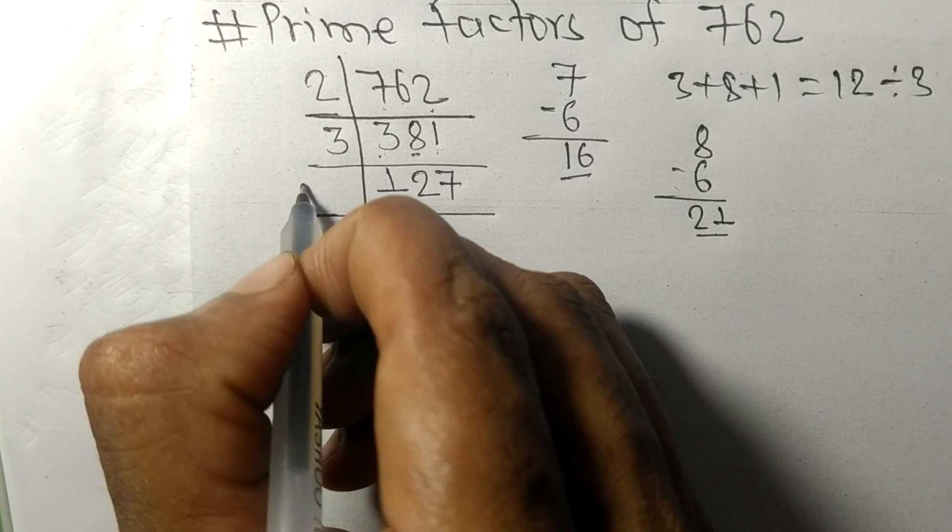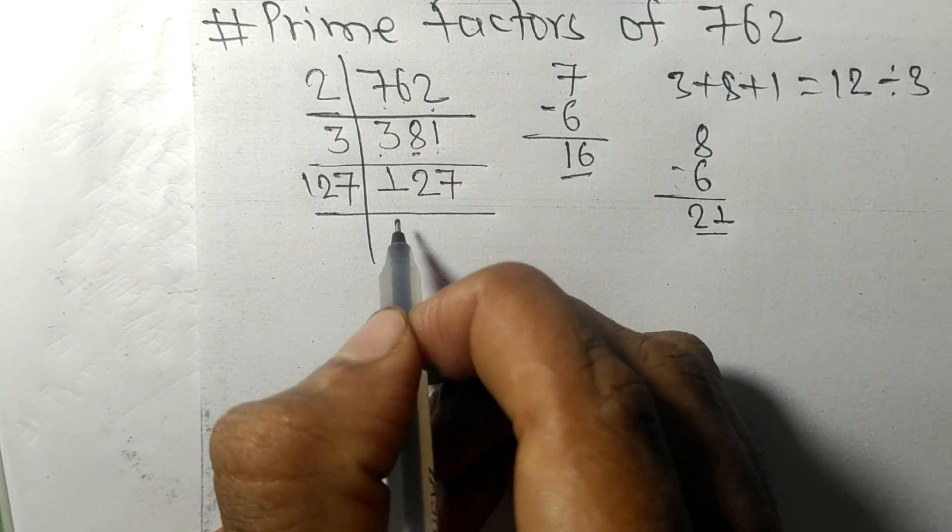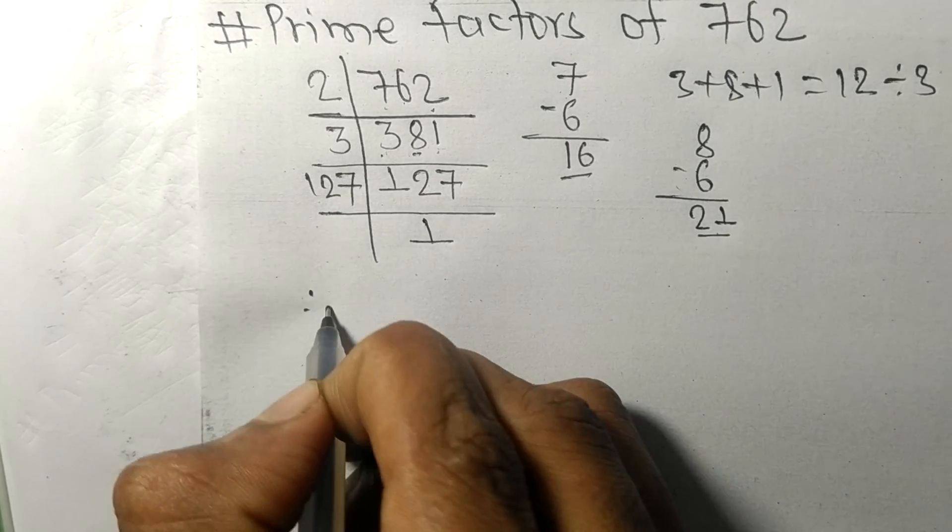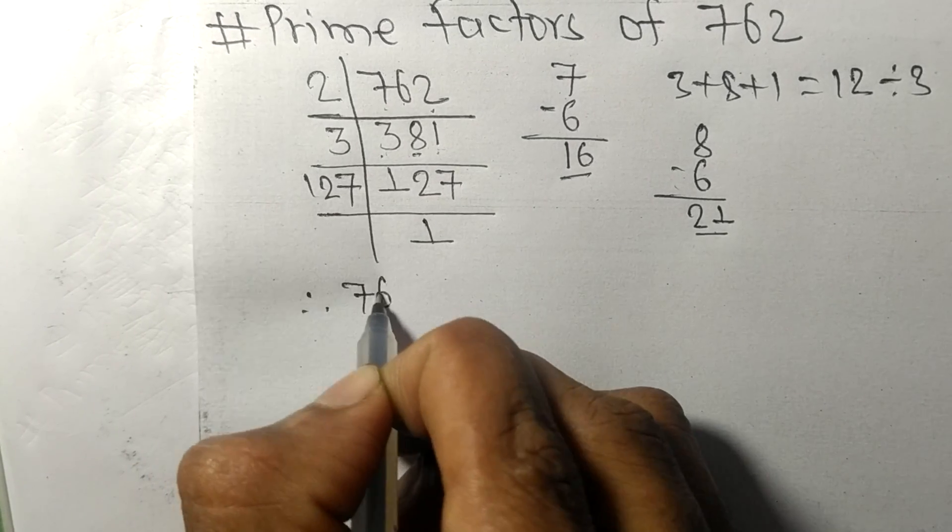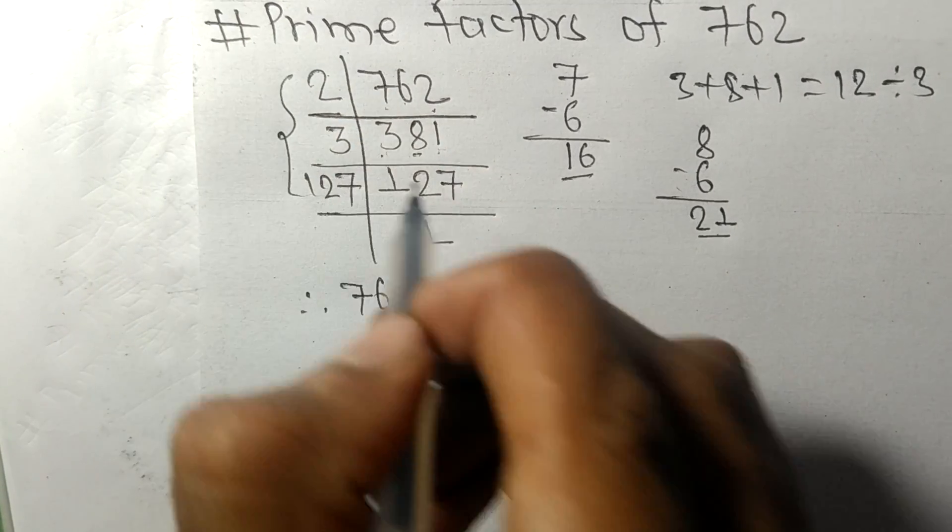So it is exactly divisible by 127 only, and on dividing we get 1. Therefore, 762 is equal to, from this side...